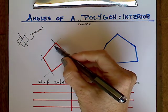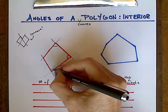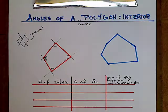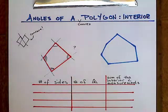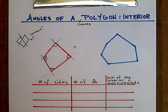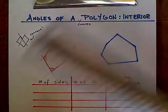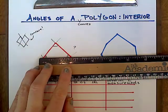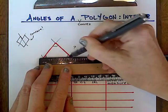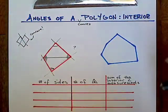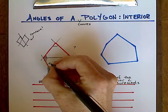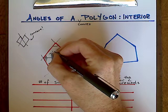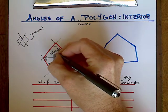What we're trying to determine is the sum of all of these interior angles. To do that, what we need to do is cut our polygon into triangles using the vertices. So we're going to pick a vertex, draw a line segment, and cut it into two different triangles — Triangle 1 and Triangle 2. As we know, every single triangle has a sum of interior angle measurements of 180 degrees.